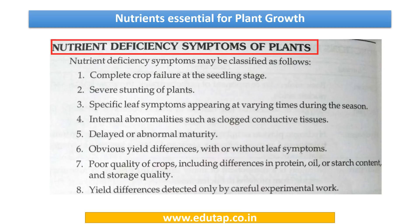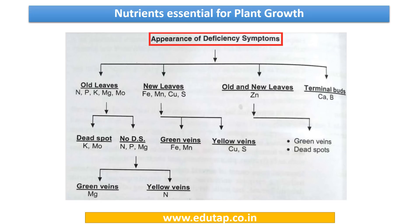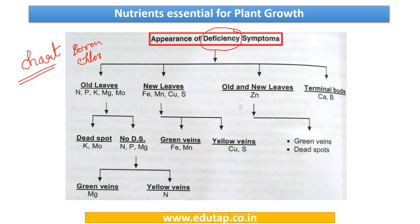Now you can see the nutrient deficiency symptoms of plants — this was discussed in a previous video. You can pause this video and have a look at the various nutrient deficiency symptoms. This is a very important chart showing the appearance of deficiency symptoms, and you need to memorize it. We are dealing with boron, chlorine, copper and iron.